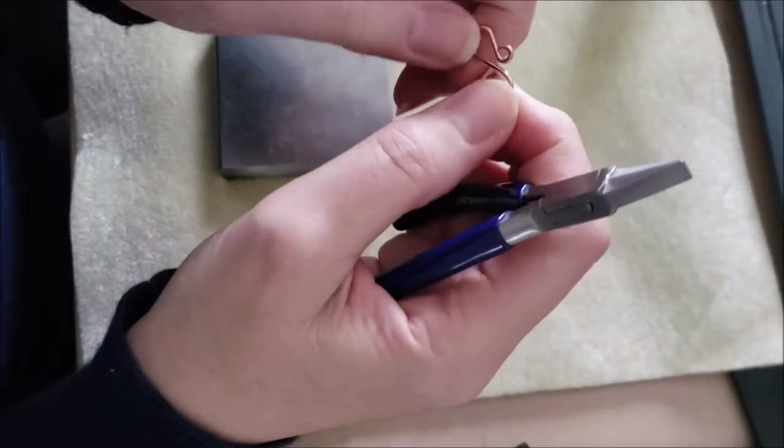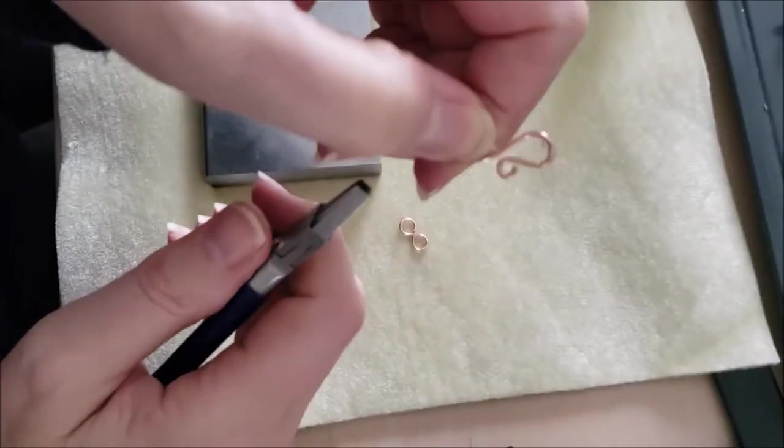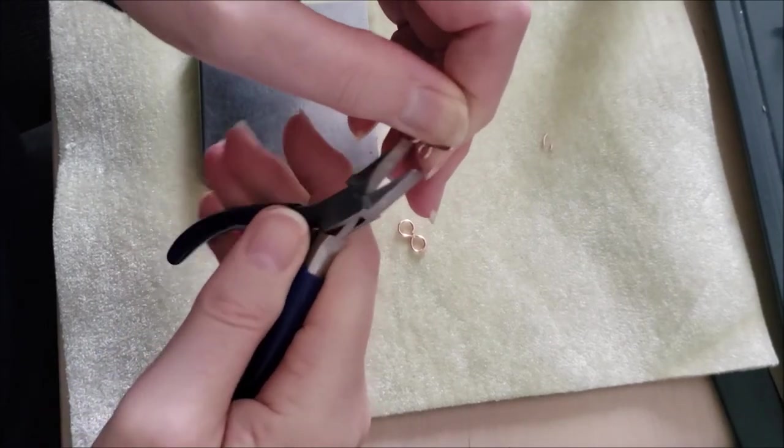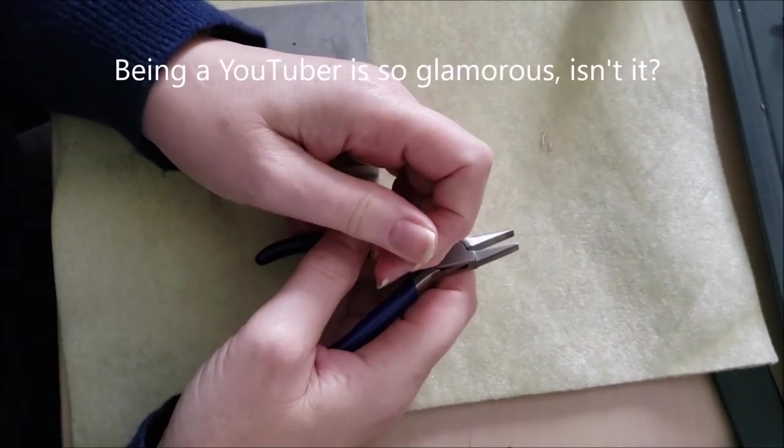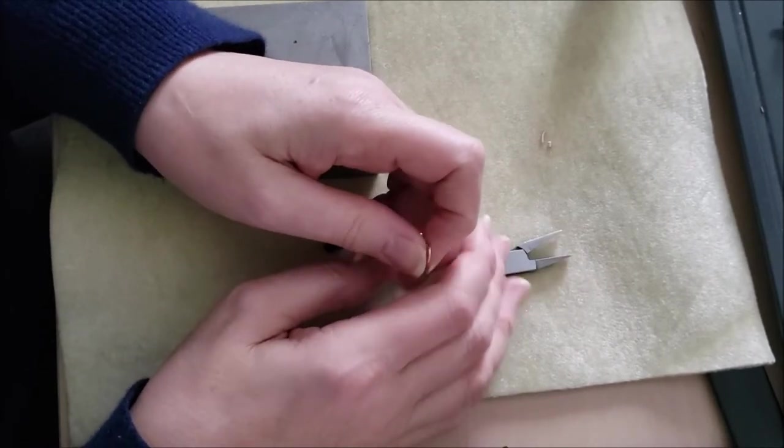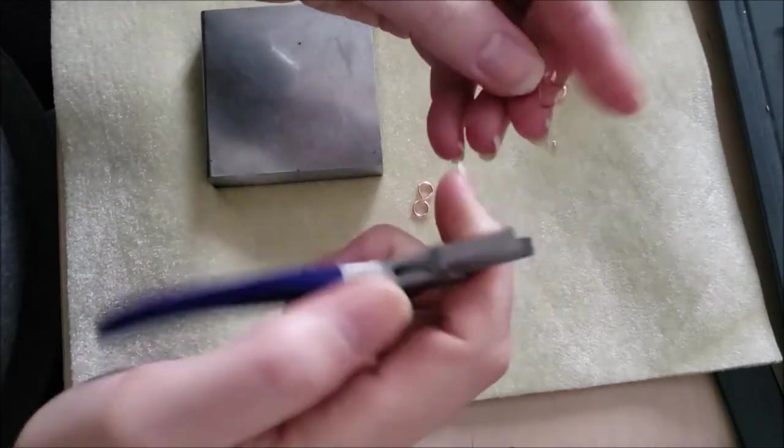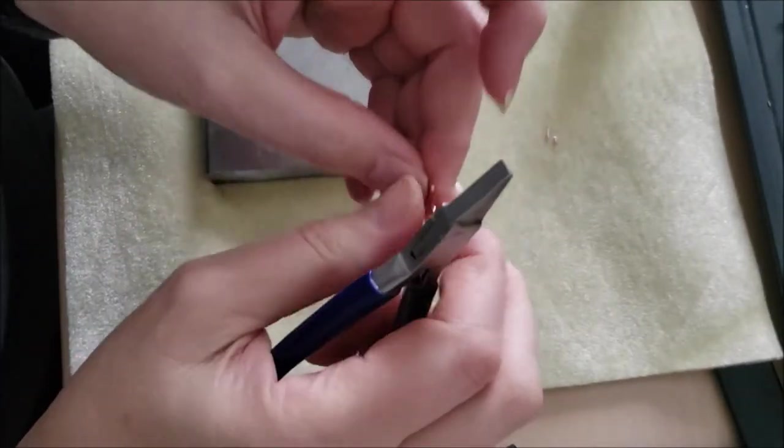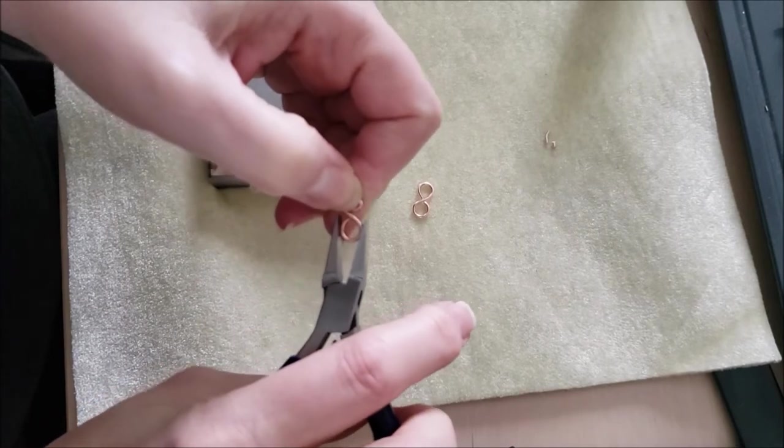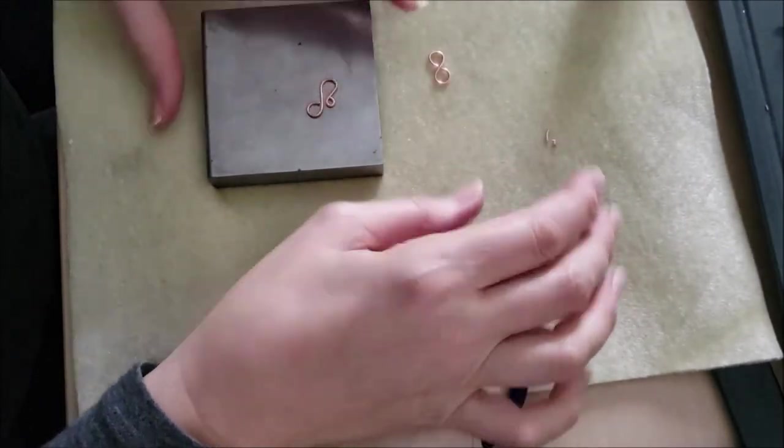I was explaining what I used the square nose pliers for. You can see right now there's a little gap there in the loop. I just grab it like this and I give it a little push. These are pretty good. Now we're going to end up doing that several times because the next step we need our bench block for.